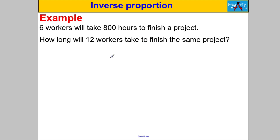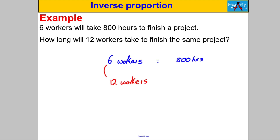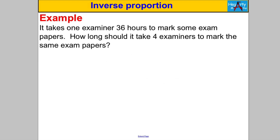Okay, here it is: six workers will take 800 hours to finish a project. It's good to write it down as a ratio — six workers take 800 hours. How long will it take 12 workers? Is this direct or inverse proportion? If you double your number of workers, you're going to reduce your project time, so you're going to halve it. It's going to be 400 hours. So the answer is 400 hours.